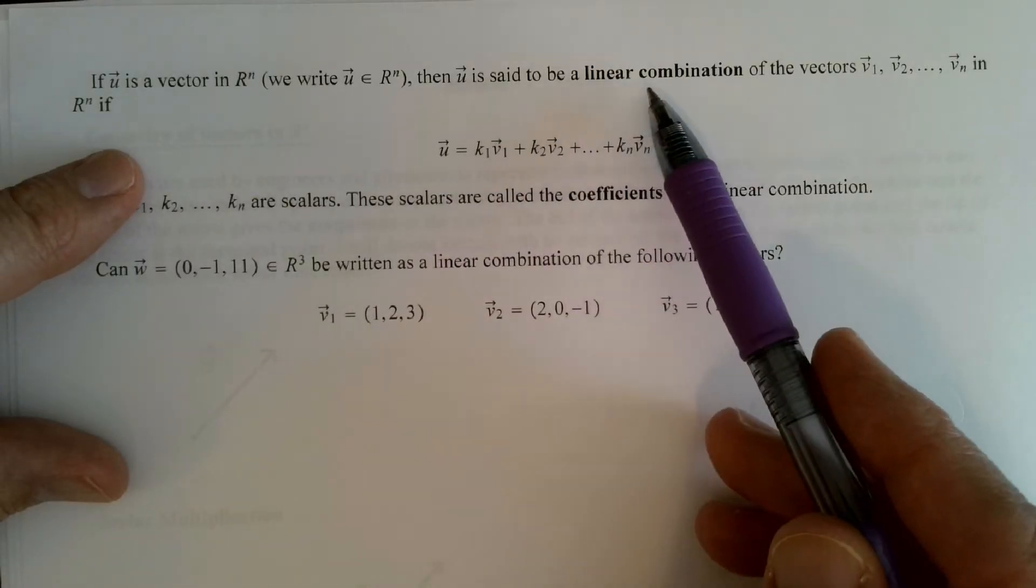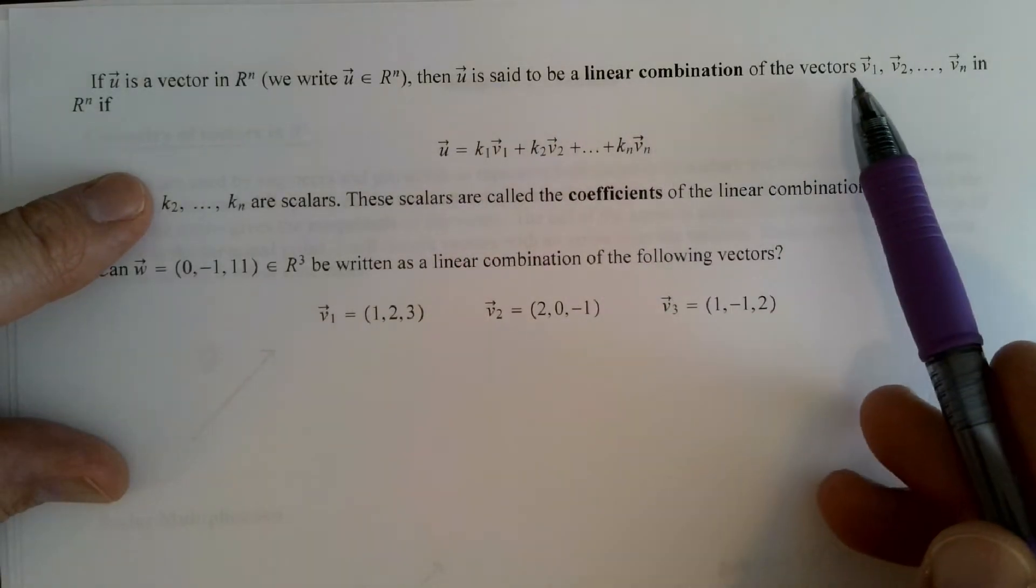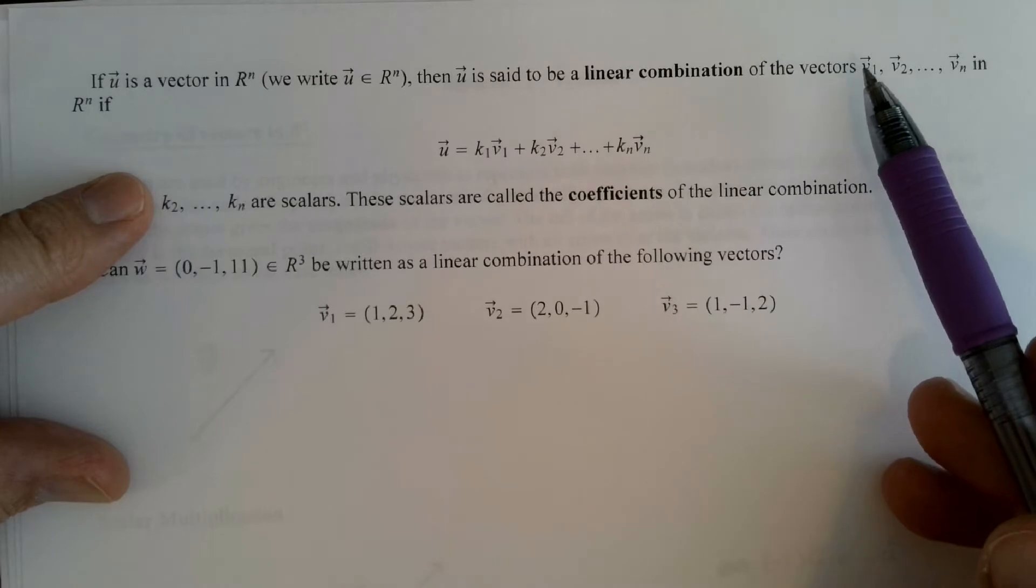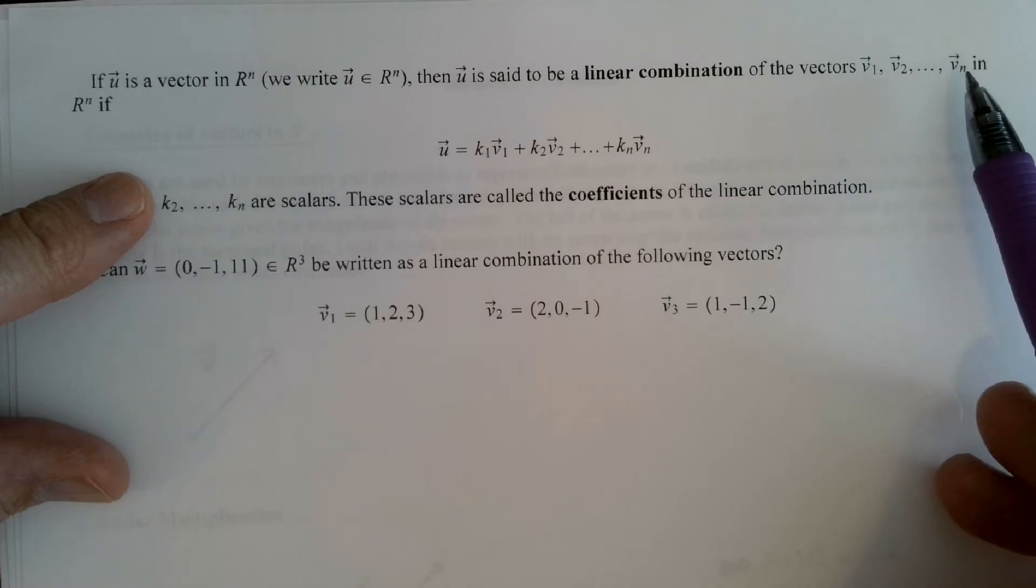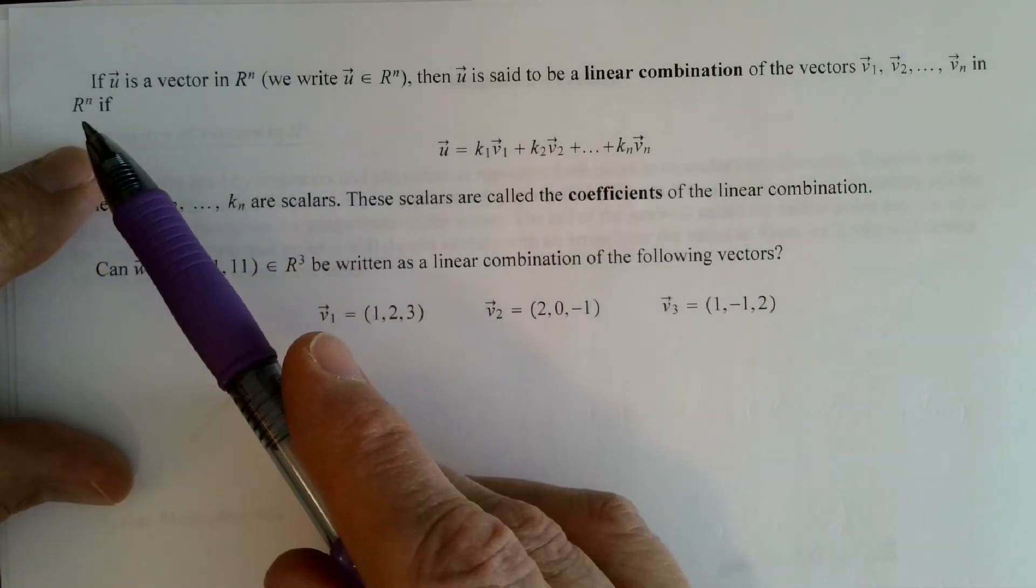u is said to be a linear combination of these vectors. Now look at these vectors, v subscript one, but notice they're vectors because there's arrows over them, v1, v2, to vn. These are vectors in n space.